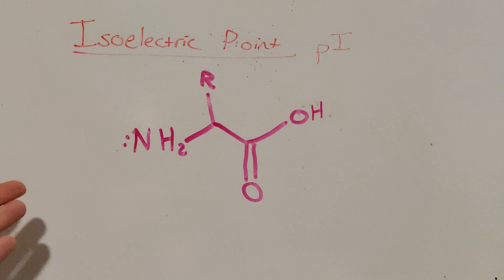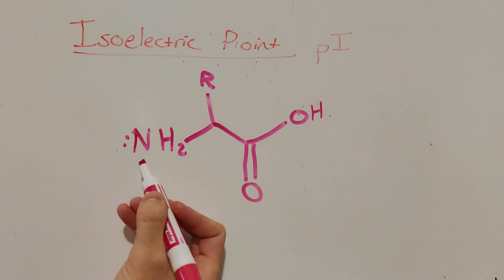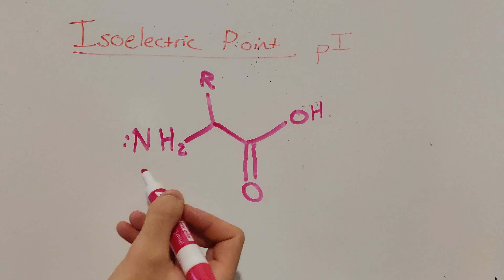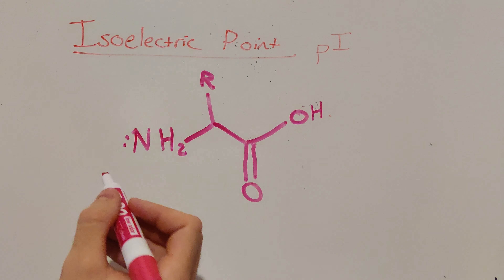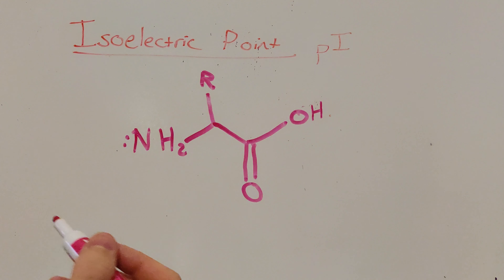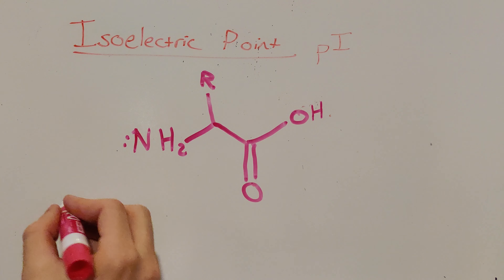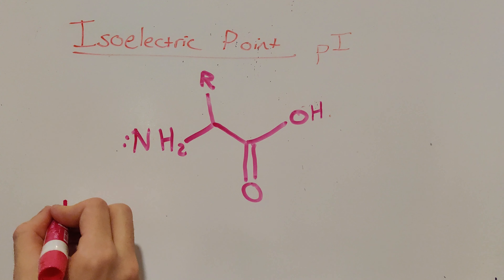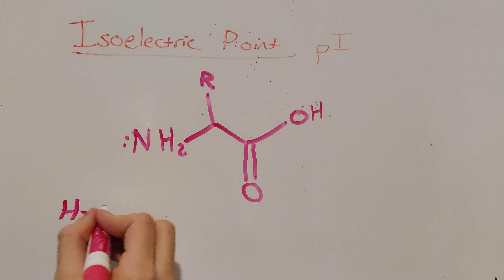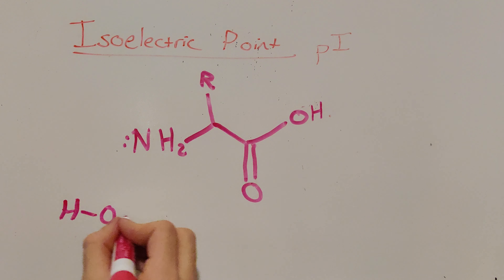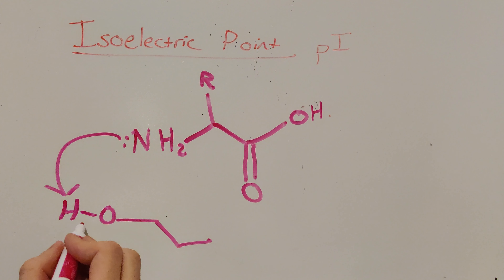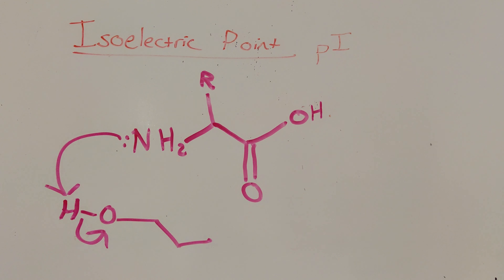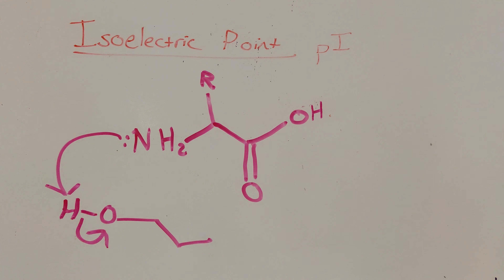It's important to go back and review the mechanism to show this deprotonation step. Our amine is neutrally charged as NH2 and has a pair of free electrons. Those free electrons are going to go out and perform this deprotonation. For example, I can draw an alcohol here with a hydrogen that can easily be deprotonated. Those electrons come over and boot the remaining electrons back onto the oxygen, completing the deprotonation.